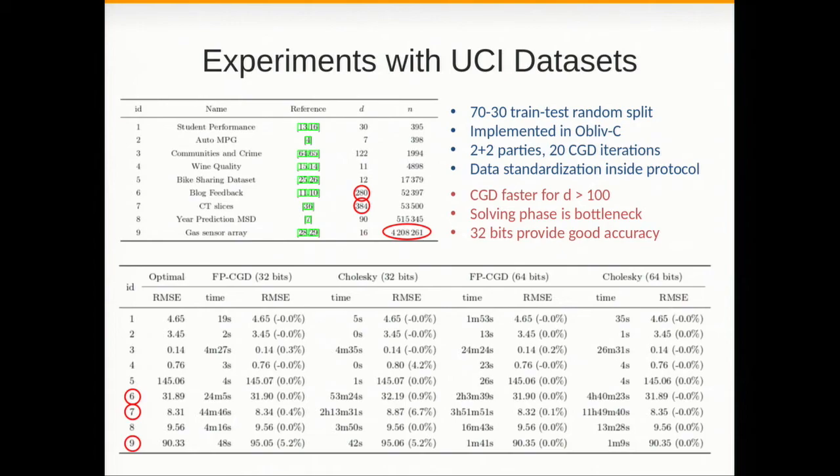We ran the algorithm on a bunch of real datasets from the UCI repository. The results are in the paper but I wanted to highlight a few things. If you look at this dataset with 50,000 records and 280 features, when we run CGD it takes like 30 minutes while Cholesky with 32 bits takes close to one hour and has less accuracy. The CGD version is as accurate as the floating point version.